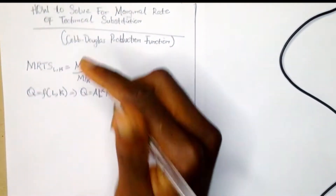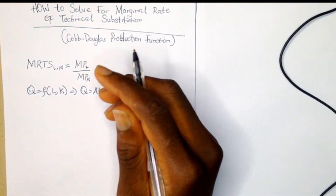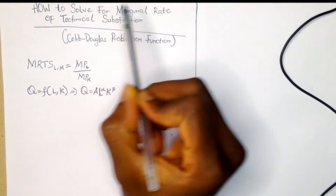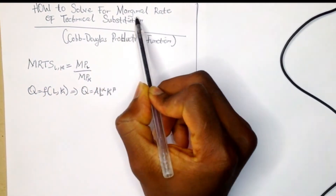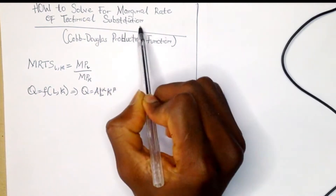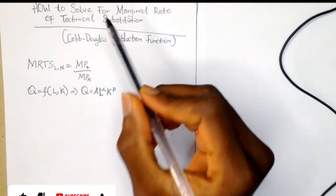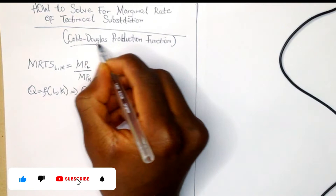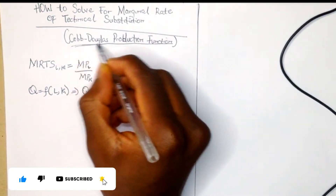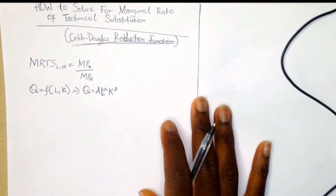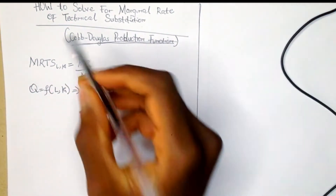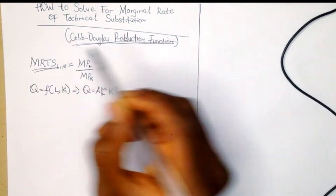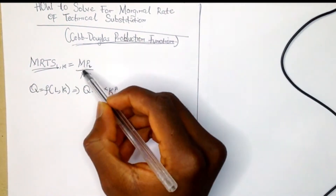Welcome guys. On today's video I'll be teaching you how to solve for the marginal rate of technical substitution, and our emphasis will be based on the Cobb-Douglas production function. Our MRTS is equal to...